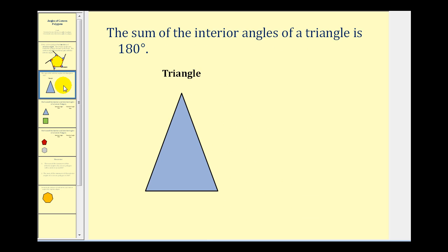Before we talk about the sum of the interior and exterior angles, let's review the sum of the interior angles of a triangle. Remember, the sum of angle one, angle two, and angle three is always equal to 180 degrees.